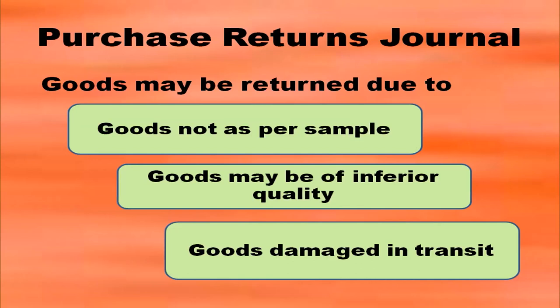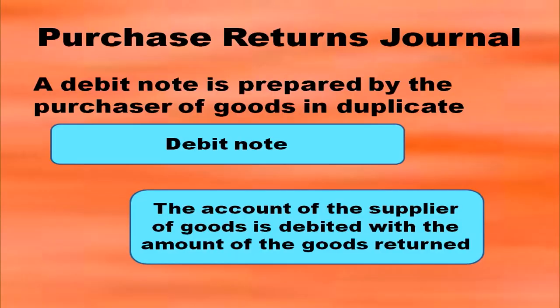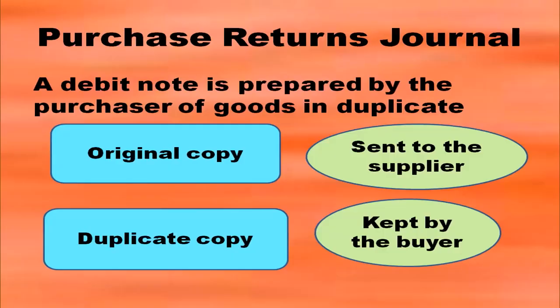Why are we returning goods? In most cases, goods may be returned because they are not as per the sample, sometimes goods may be of inferior quality, or some goods may be damaged in transit. These can be the reasons why the company is returning goods to the concerned supplier. While preparing purchase returns journal you have to prepare a debit note, and this is prepared by the purchaser of goods in duplicate.